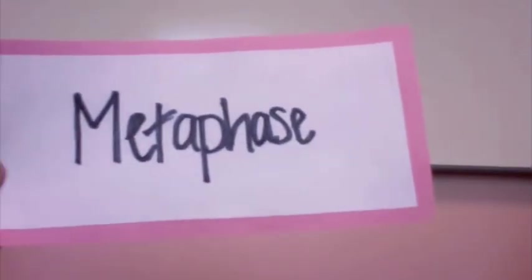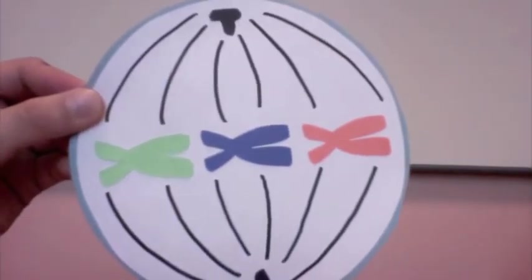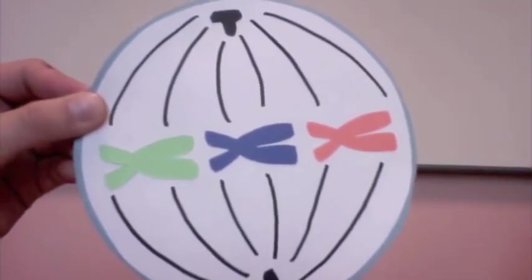Next, metaphase occurs. In metaphase, the sister chromatids line up in the center of the cell. This part of the process can be easier to remember if you relate metaphase to middle, referring to the middle of the cell.